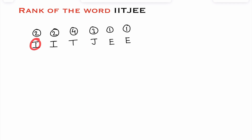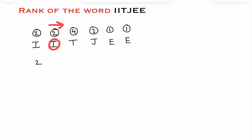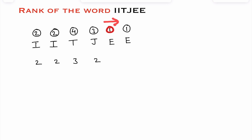Now, for the first I (number 2), observe the right side: how many numbers are there smaller than 2? Two numbers are there, so write 2. For the second I also, how many numbers to the right are smaller than 2? Two numbers are there. For T (number 4), three numbers are smaller. For J (number 3), two numbers are smaller. For the first E (number 1), no number is smaller, so write 0. Similarly for the second E, write 0.